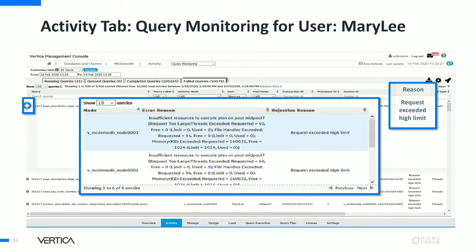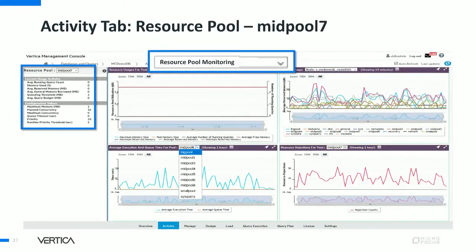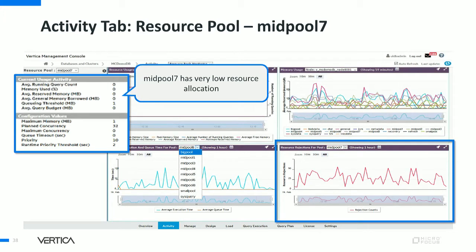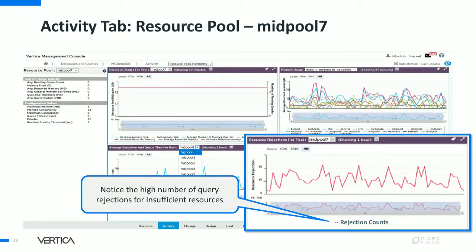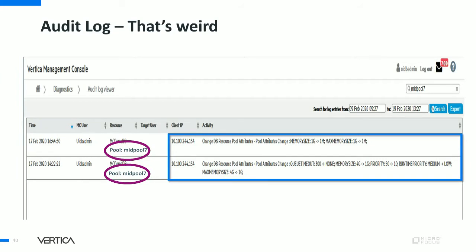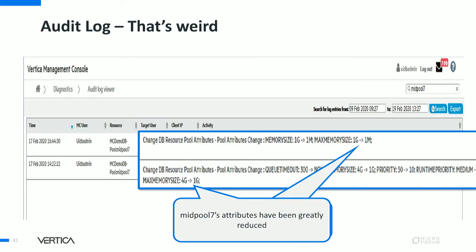Going to the resource monitoring view and selecting mid-pool 7, I see the resource allocations are very low — max memory is just 1 MB and max concurrency is set to 0. That's a very odd configuration for this resource pool. The bottom right graph for resource rejections for mid-pool 7 shows very high values. To find out when the settings were changed, I can review the audit logs on the Management Console. Adjusting the time range and filtering the logs for mid-pool 7, I can see that on February 17th, the memory and other attributes for mid-pool 7 were modified.